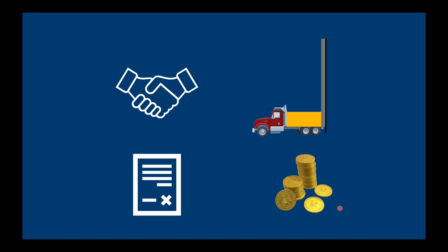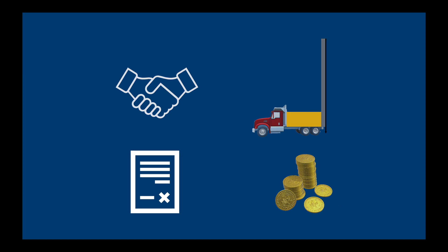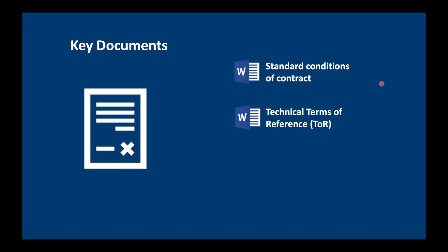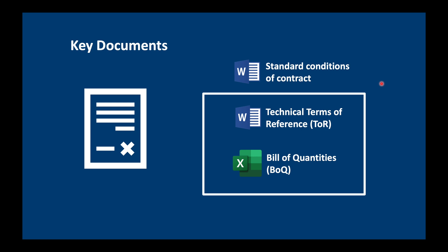All this will be controlled by a bunch of documents. The key documents required are, first of all, the standard conditions of contract — usually one big document written by the lawyers of your institution or company. That's not something we're going to edit. What we hydrologists will be asked to do is develop the technical terms of reference and also the bill of quantities. These are the two documents we're going to talk about today.